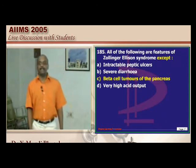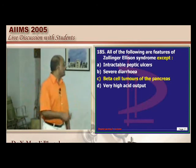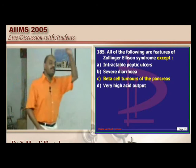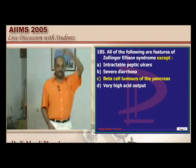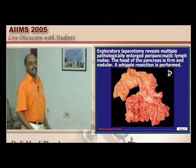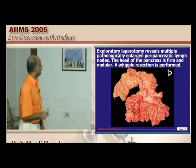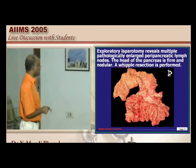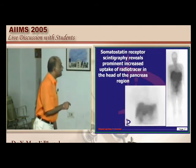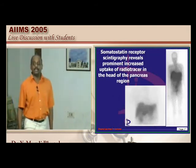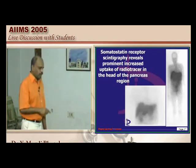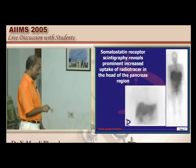In Zollinger-Ellison syndrome, it is the gastrin-producing cells of the pancreas — not beta cells — that produce excess gastrin, which stimulates parietal cells to produce too much HCl, flooding the duodenum and leading to multiple refractory duodenal ulcers. Somatostatin receptor scintigraphy is a modern method to identify neuroendocrine tumor metastases, including in the liver.